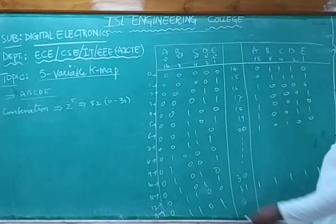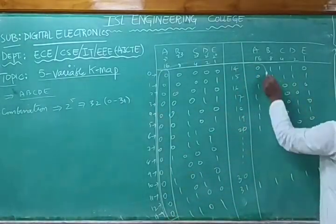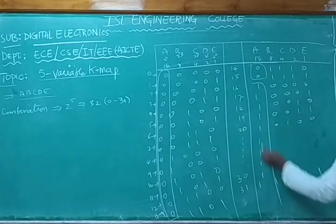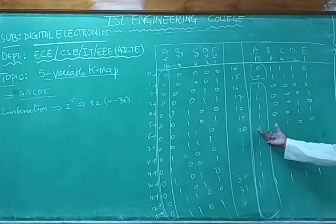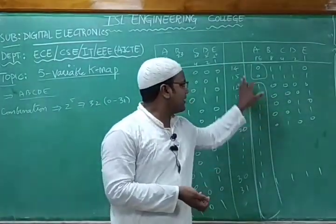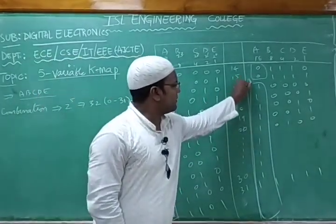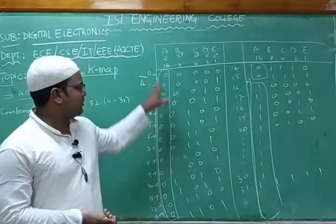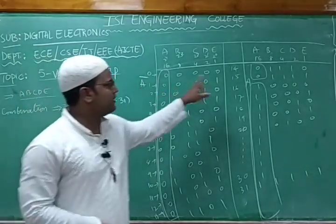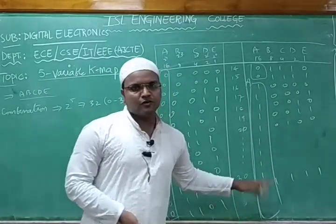As you can see, for the initial values from 0 to 15, the A value is 0. From 16 onwards, all A values are 1. So we can segregate: for rows 0 to 15, A is A-complement (A-bar), and for rows 16 to 31, A is equal to 1. This allows us to separate the five-variable KMAP into two parts.